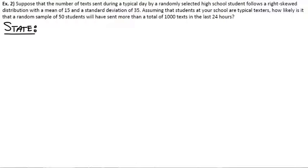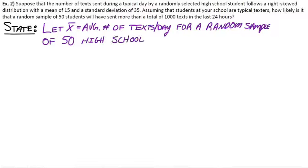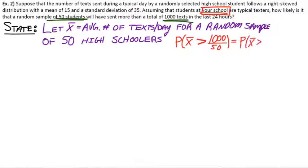So let's start with the state step. What's going on here? What are we trying to solve? And what variables are we going to use? So, x-bar is going to be our sample mean. So, x-bar is going to be the average number of texts per day for a random sample of 50 high schoolers. Apparently the population average is 15. We're considering 1,000 texts for 50 students. So, in our case, we would take 1,000 divided by 50. We want to know what's the probability that they sent more than that on average. So, 1,000 divided by 50. We want to know what's the probability of x-bar being greater than 20.